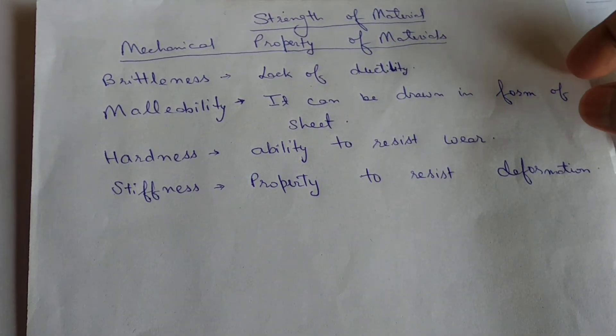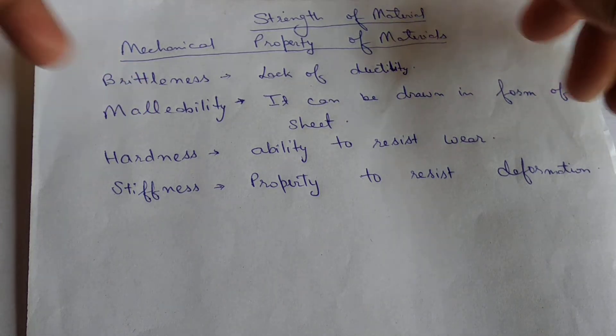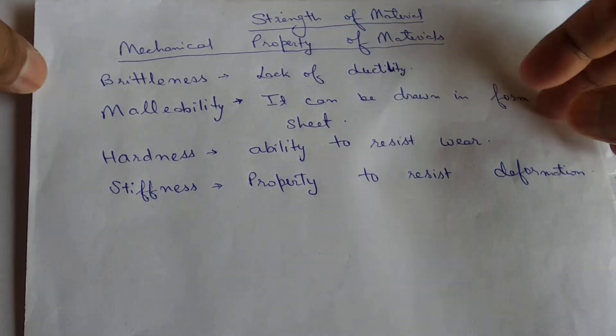Then, next is hardness. What is hardness? It is the ability to resist the wear when we apply force on the object.